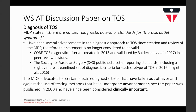With respect to diagnosis, the paper states there are no clear diagnostic criteria or standards for thoracic outlet syndrome. However, since the paper was written there have been several advancements in the diagnostic approach to TOS. CORE-TOS developed diagnostic criteria in 2013, validated by Baldwin et al. in 2017. The Society for Vascular Surgery published reporting standards including diagnostic criteria for each subtype in 2016. The discussion paper also advocates for certain diagnostic tests that have fallen out of favor and is against testing methods that have since been recognized as gold standard.